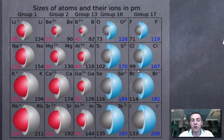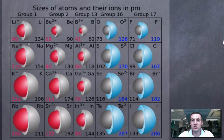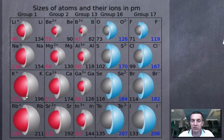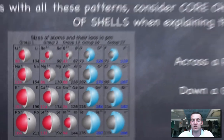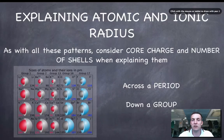Going down a group, the core charge doesn't change — it stays the same. But the number of shells is increasing all the time. So those outer shell electrons get further and further from the nucleus because they effectively feel the same amount of charge but are in more and more distant shells. So the atomic radius increases as we go down a group.